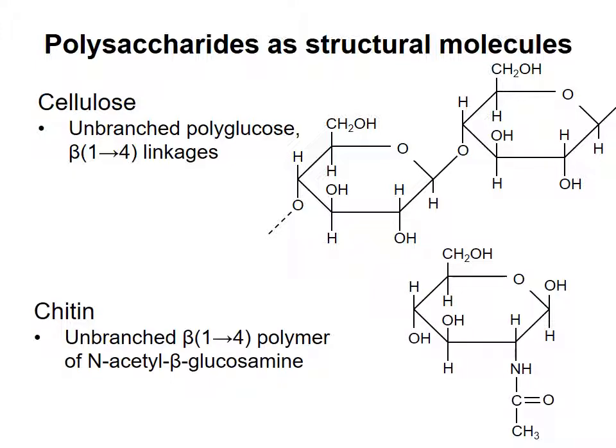Chitin, which forms the exoskeleton of insects, is a linear polymer of N-acetyl beta-glucosamine. The monomer in chitin is related to glucose but has an N-acetyl group at carbon-2 instead of a hydroxyl group. Even though it deviates from the normal chemical formula of carbohydrates, chitin is still considered a polysaccharide because it is based on a molecule that is very closely related to a monosaccharide. Note that cellulose and chitin cannot be digested by humans because we lack the appropriate enzymes to break the beta-1,4 linkage.